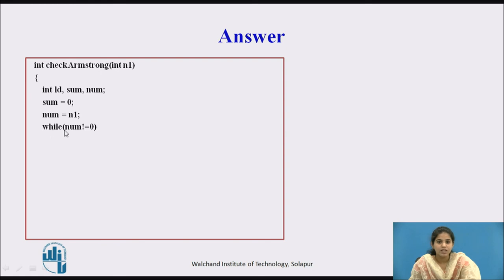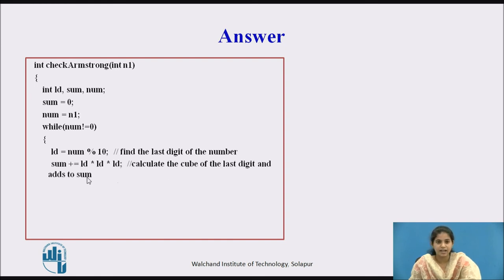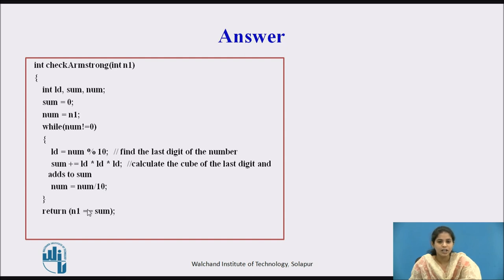We use a while loop: while num is not equal to 0, we do the processing. First, we calculate the last digit using num mod 10, stored in ld. Then we calculate the cube of the last digit and add it to sum. Finally, we remove the last digit by dividing num by 10. We return the value of n1 equal to sum to the calling function.